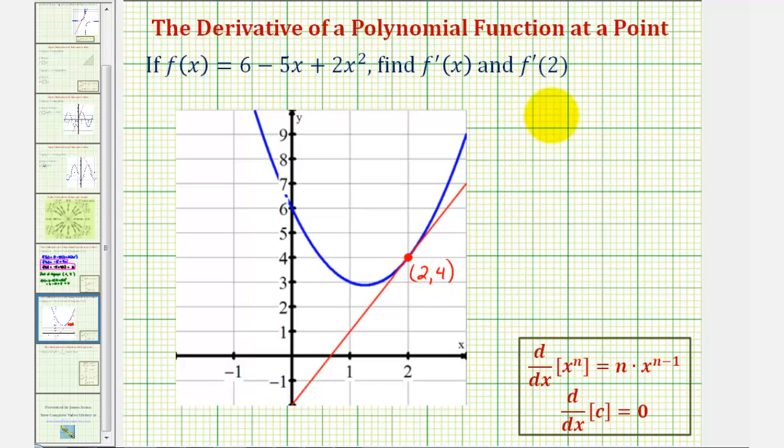And since f prime of 2 was equal to 3, we know the slope of this tangent line is equal to 3. I hope this was helpful.